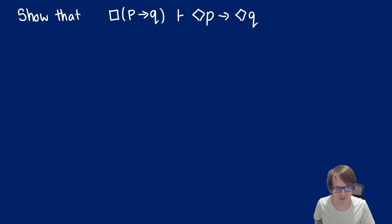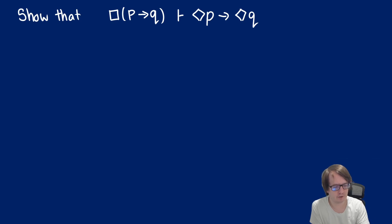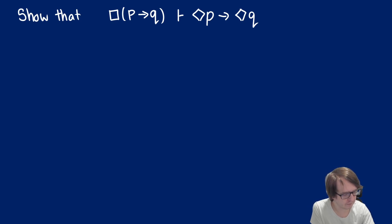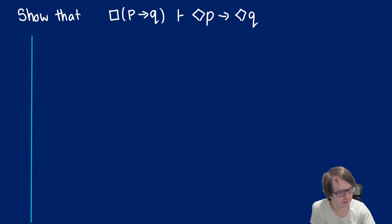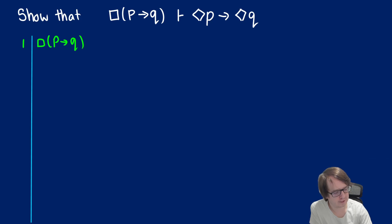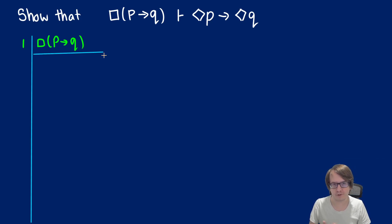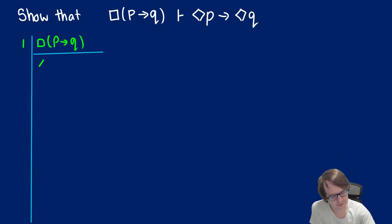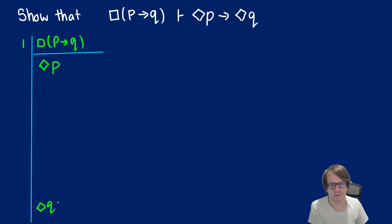Let's start with a proof, because this proof is important for showing our derivable rule, diamond elimination. We want to show that box(p → q) entails — or in our proof system, proves — diamond(p) → diamond(q). We start by assuming box(p → q) as line one. Our goal is to get diamond(p) → diamond(q), so we assume diamond(p) for a conditional proof, and we'll get diamond(q) out of it.